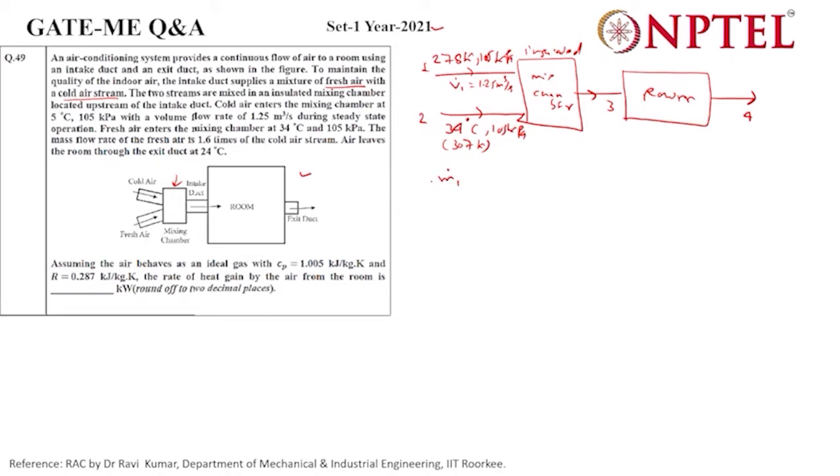m1 dot is the cold stream air and m2 dot is 1.6 times m1 dot. Keep in mind, if you read in a hurry, then you may take 1.6 times the volume flow rate instead of mass, which would be wrong. We have to first find the mass flow rate of this and then multiply by 1.6.